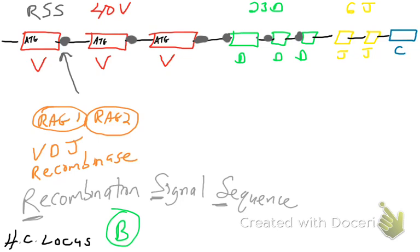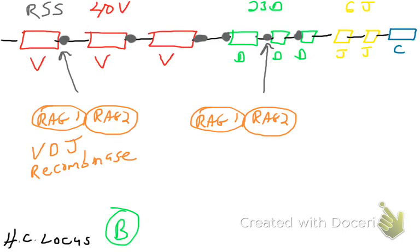We said there are about 40 of them, so the RAG can land on one of 40 and it's going to cut when it lands there. The RAGs will land on an RSS next to a V gene segment. They'll land on an RSS next to a D gene segment. And when they land, they're going to cut.